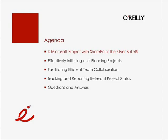Here's the agenda for the next hour. First, I'll talk about whether Microsoft Project with SharePoint is the silver bullet of project management. Second, we'll step through the process of a typical project life cycle — how you effectively initiate and plan projects utilizing these two tools. Third, we'll talk about how you facilitate efficient collaboration other than using email, network share, and the good old reliable thumb drive. And lastly, we'll look at how you track and report relevant project status — tracking schedule (are you ahead or behind?), tracking budget (over or under?), and tracking changes (how many change requests came in, is scope creeping?). We'll see how these two tools can support us.